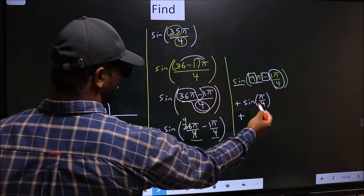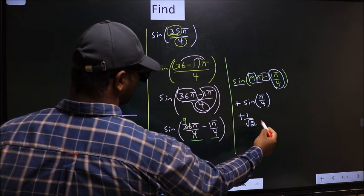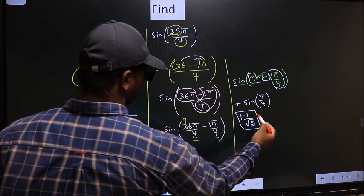So plus sin π by 4 is 1 by root 2. So this is our answer.